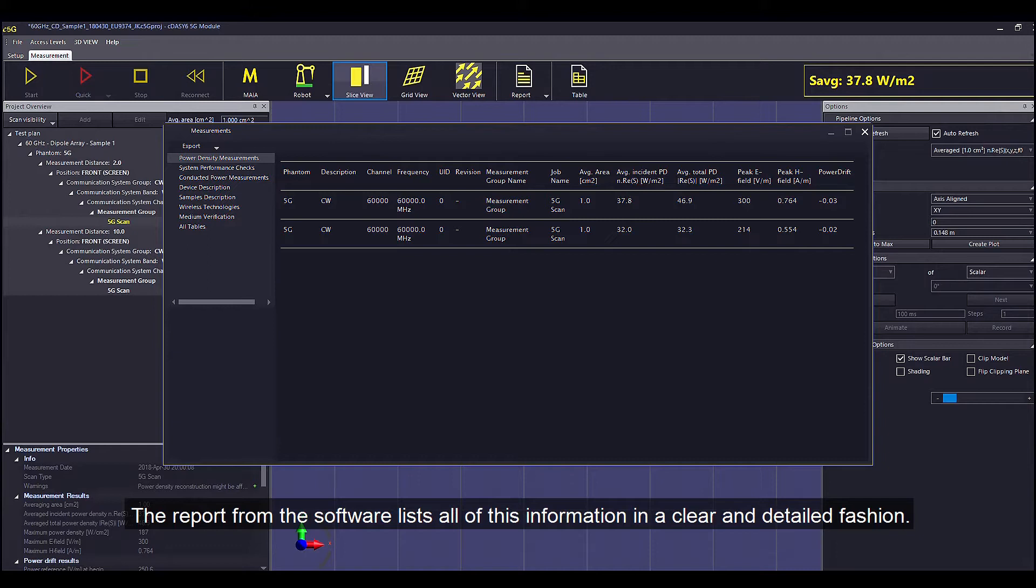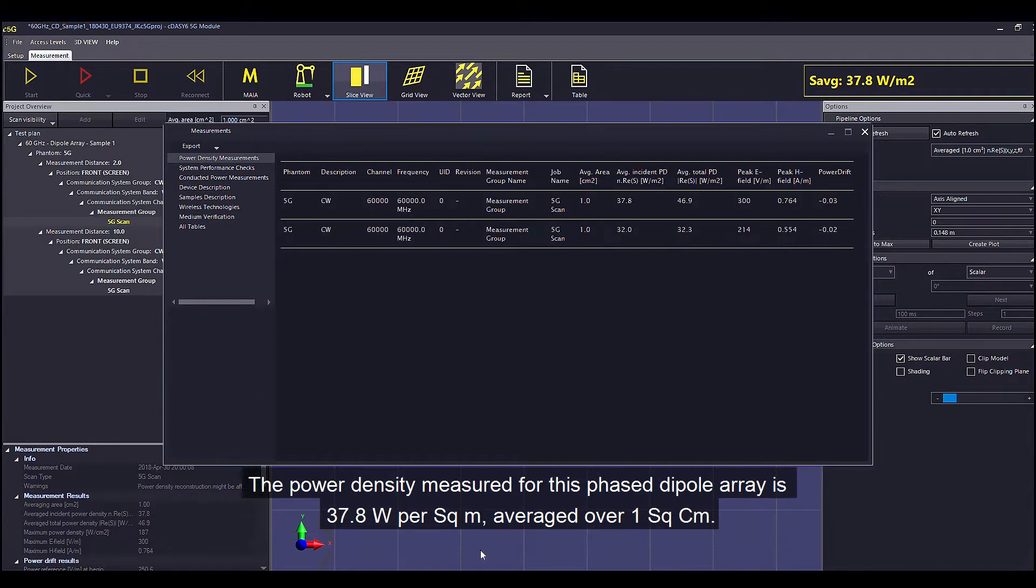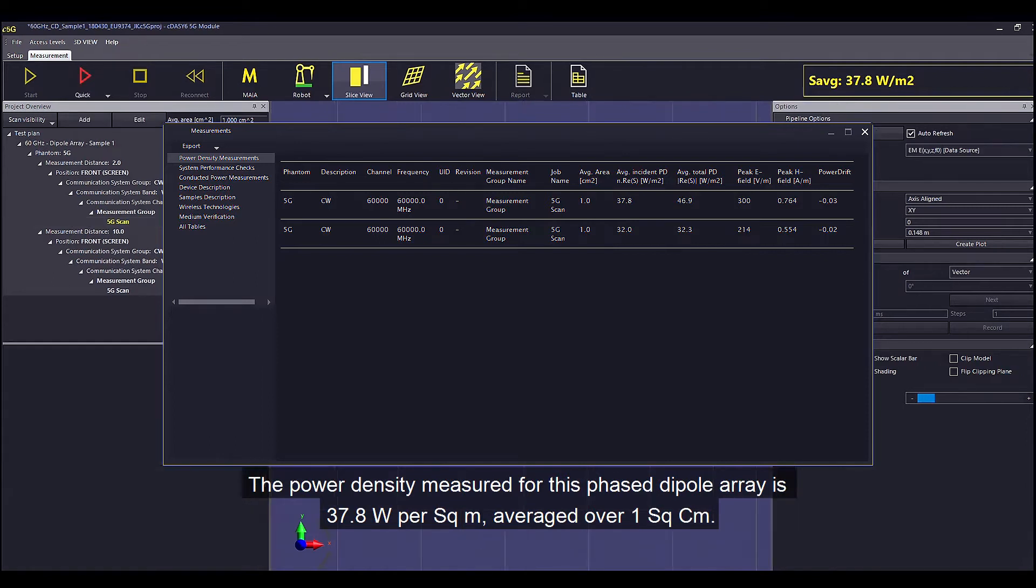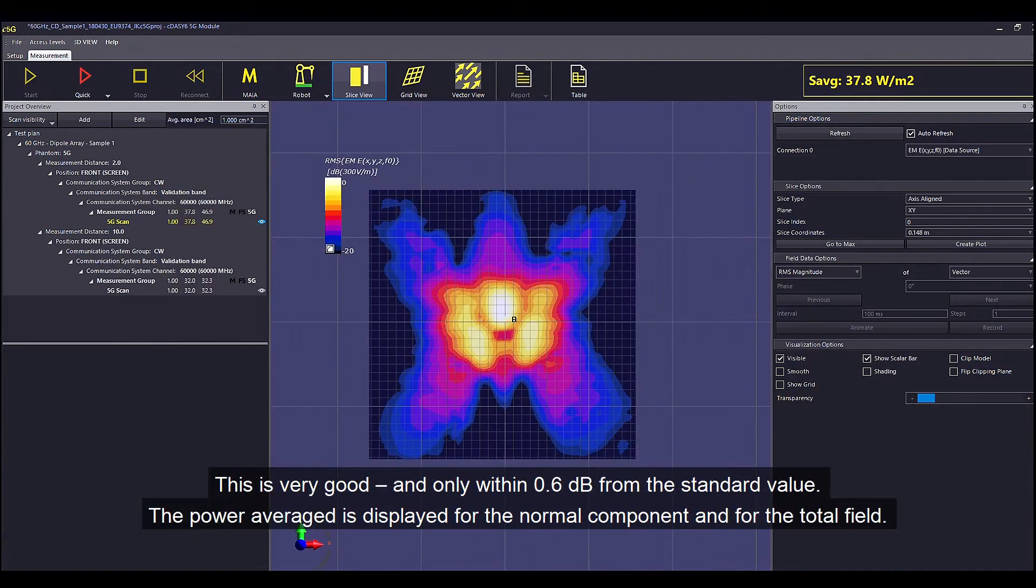The report from the software lists all of this information in a clear and detailed fashion. The power density measured for this phased dipole array is 37.8 watts per square meter averaged over one square centimeter. This is very good and only within 0.6 dB from the standard value.